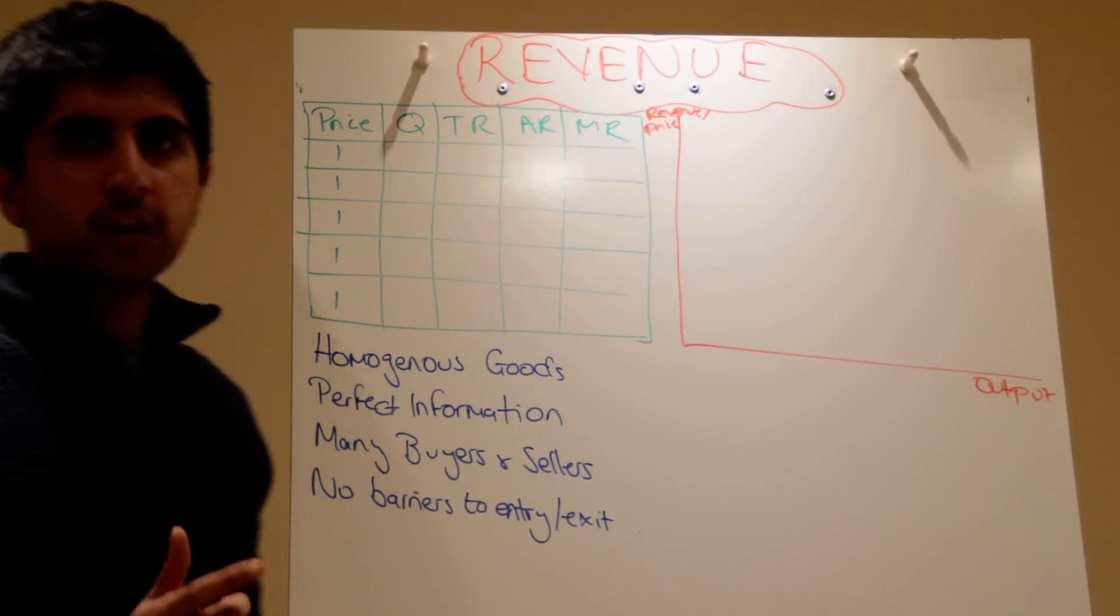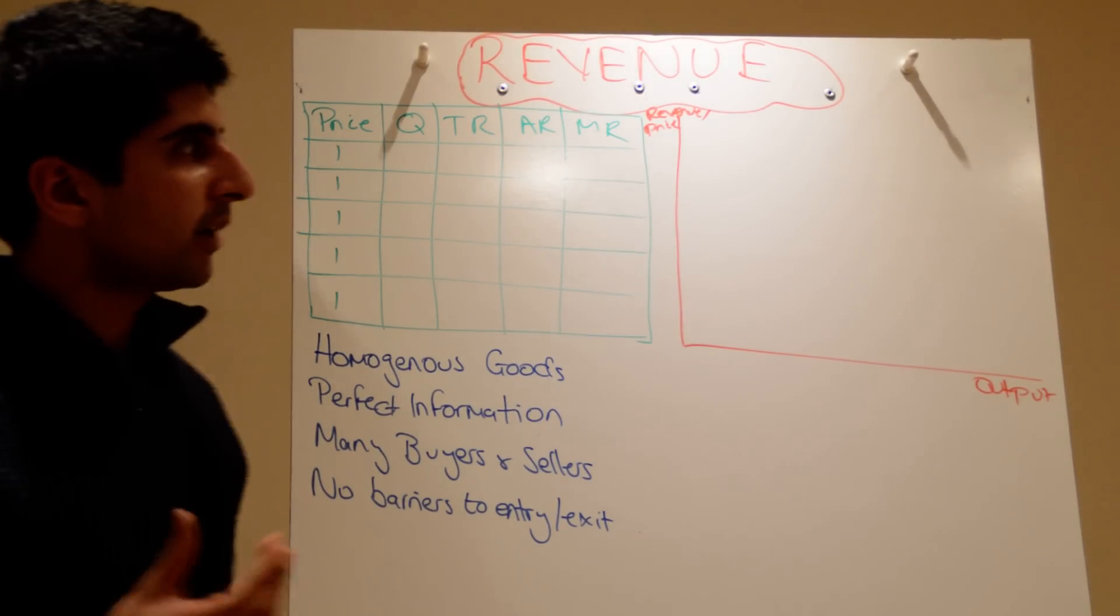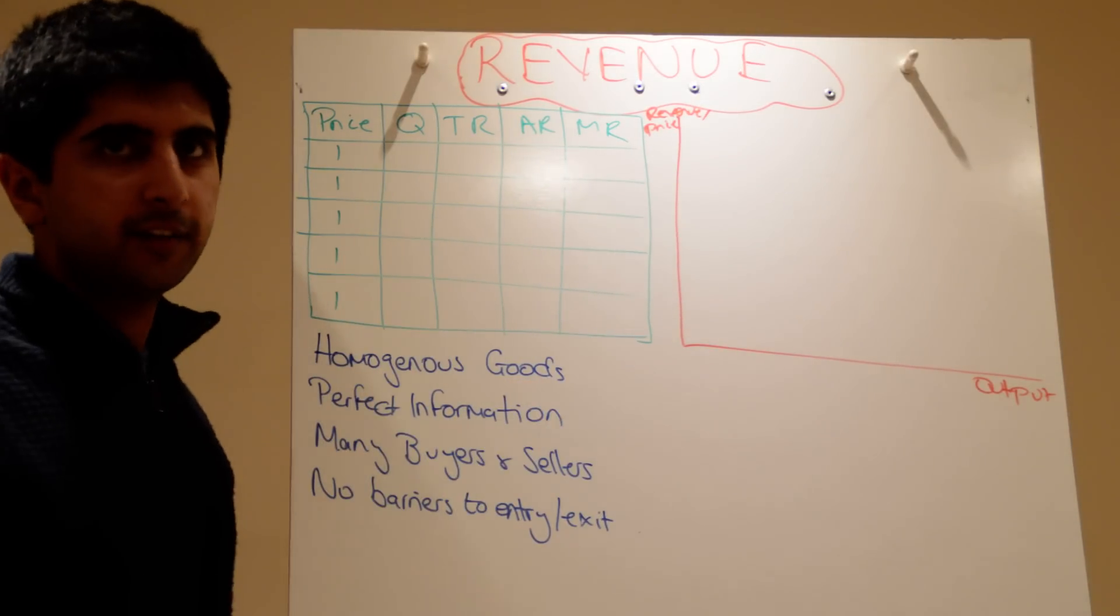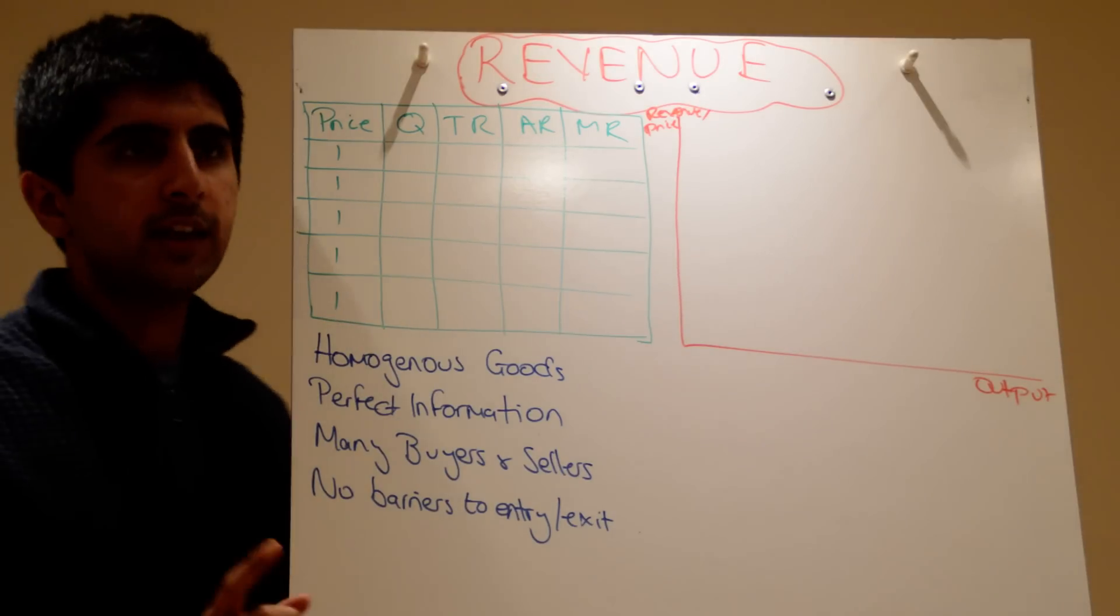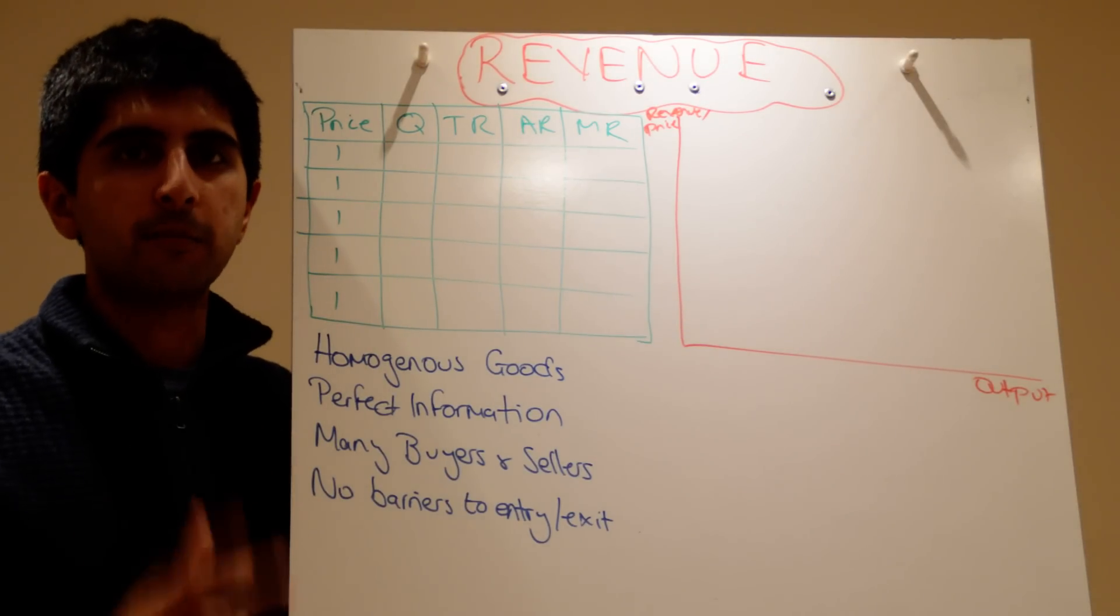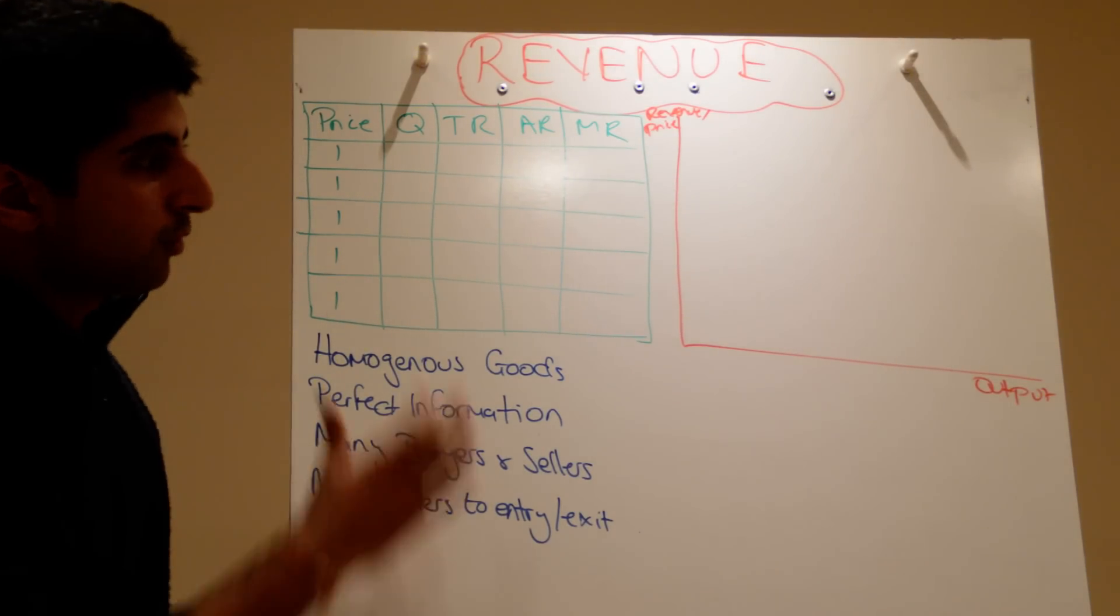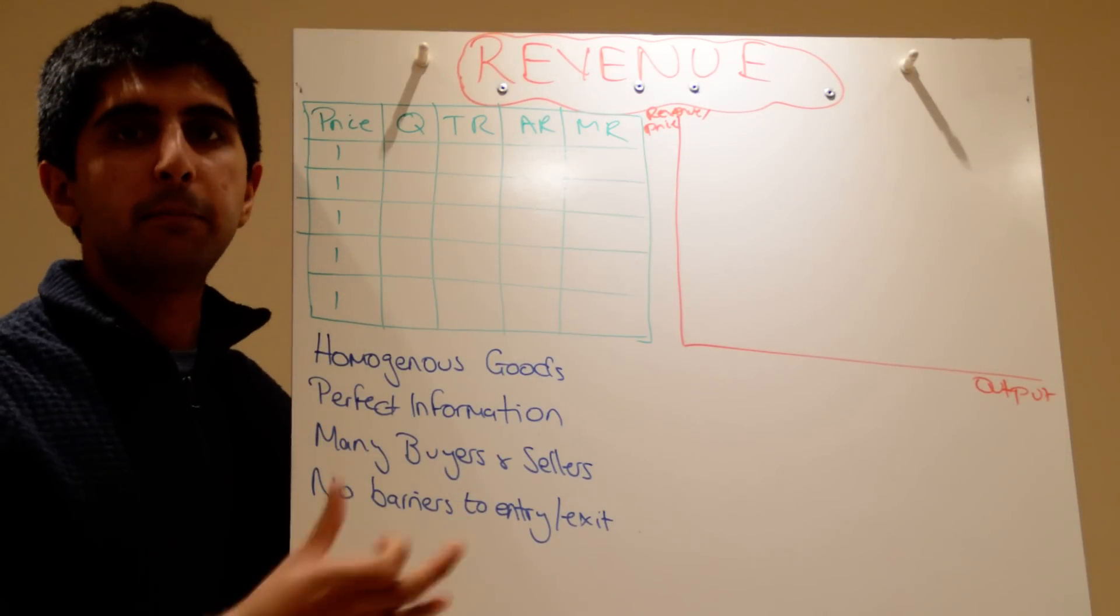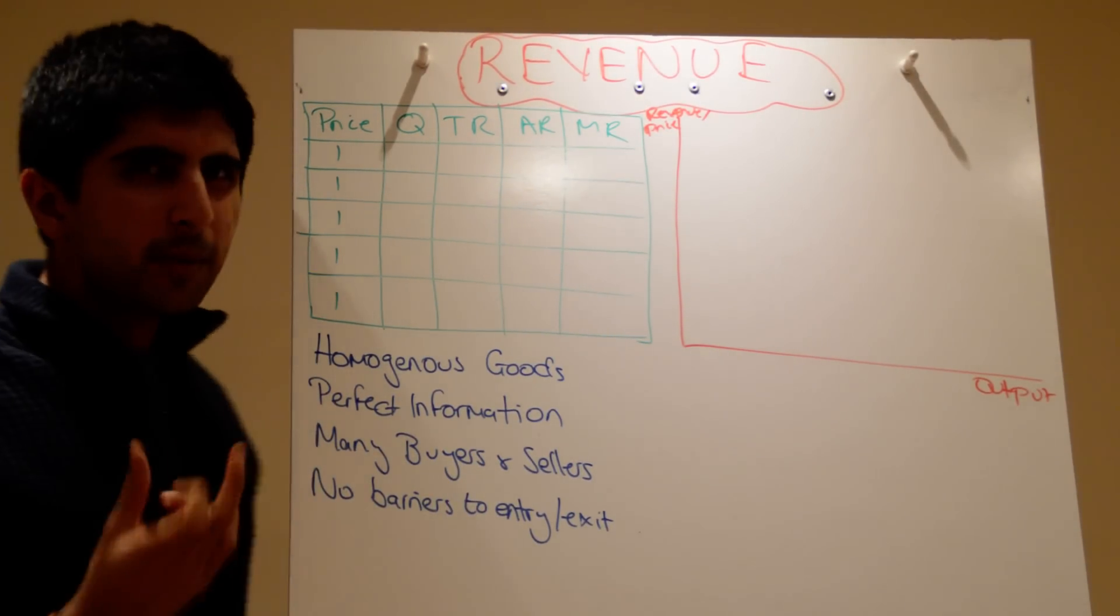So we've done short run costs and long run costs. Now let's bring in revenue to the mix and see how revenue curves look diagrammatically. But to do so we need to distinguish between two different types of market structure, because revenue curves look different in perfect competition and in imperfect competition.